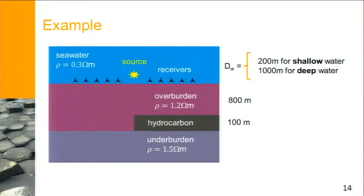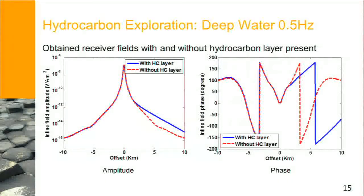Here is an example problem: a layer of water — either 200 meters shallow or deep — over some overburden with a hydrocarbon layer. The observed electric field is plotted against offset from the source in kilometers. Comparing results with and without a hydrocarbon layer, you see a significant difference in field strength large enough to detect, and an even more significant difference in phase of the received signal. That phase and amplitude difference is what allows determination of whether a hydrocarbon layer is present.